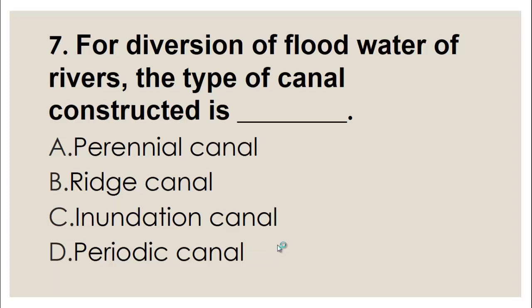MCQ number seven: For diversion of flood water of rivers, the type of canal constructed is — A) Perennial canal, B) Ridge canal, C) Inundation canal, D) Periodic canal. An inundation canal is a type of canal used for the diversion of flood water of rivers, so the right choice is C, inundation canal.